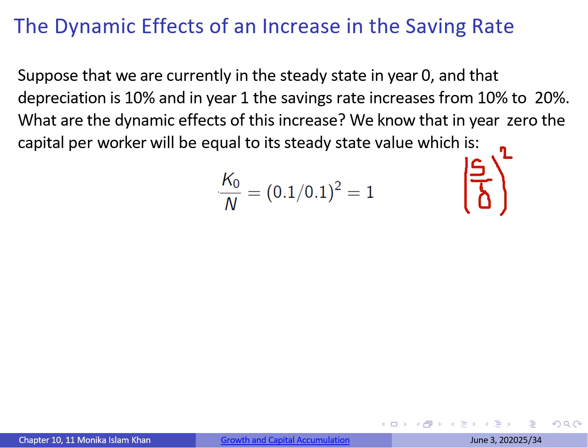Now let's look at the dynamic effects of an increase in the savings rate using a numerical example. Suppose we are currently in the steady state in year 0, with a depreciation rate of 10% and a savings rate of 10%. In year 1, the savings rate increases from 10% to 20%. In year 0, capital per worker equals its steady state value (S/delta)², which gives us K_0/N = 1.